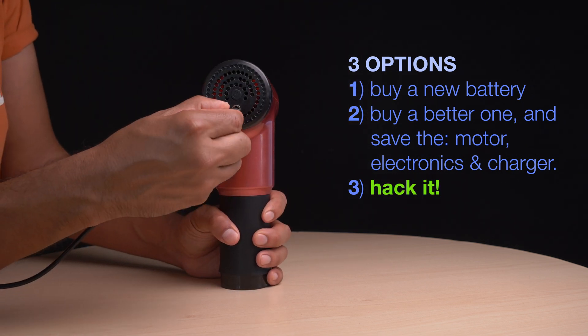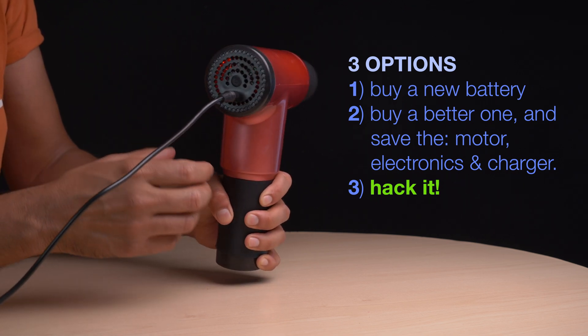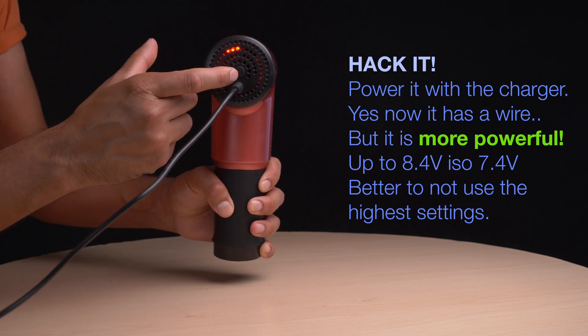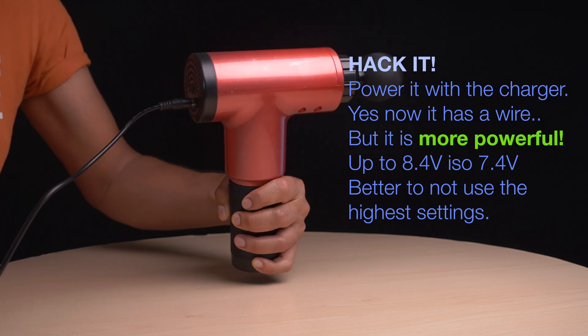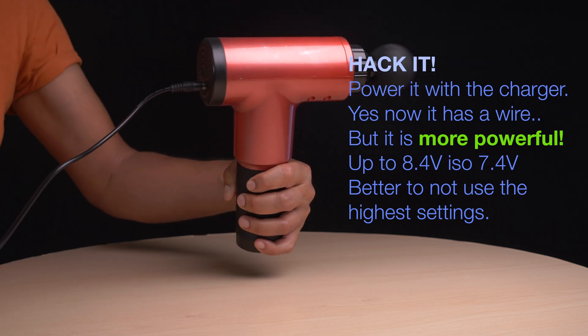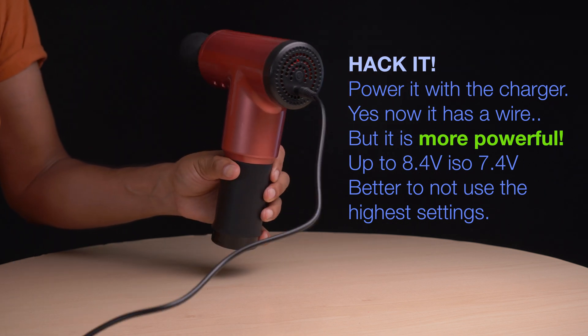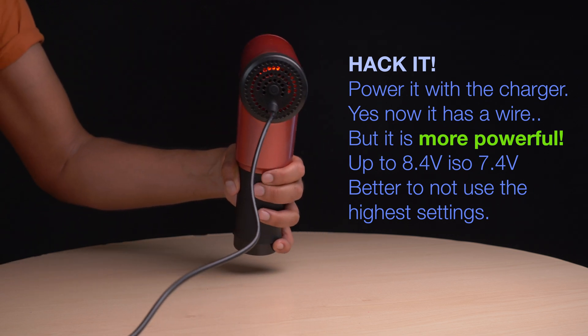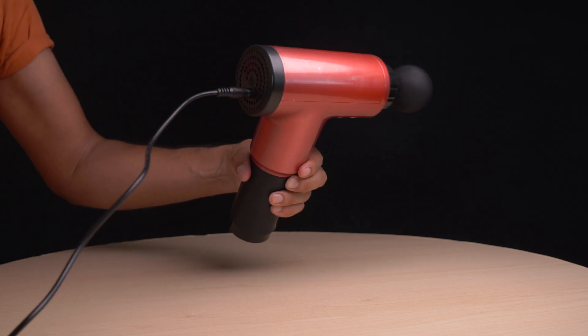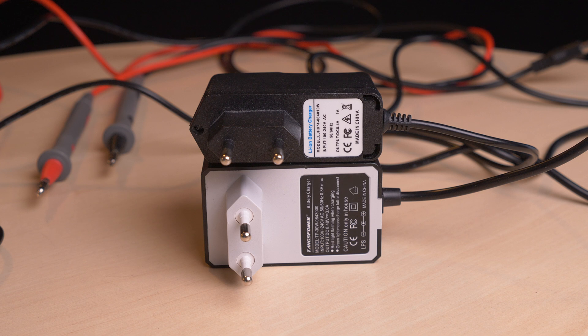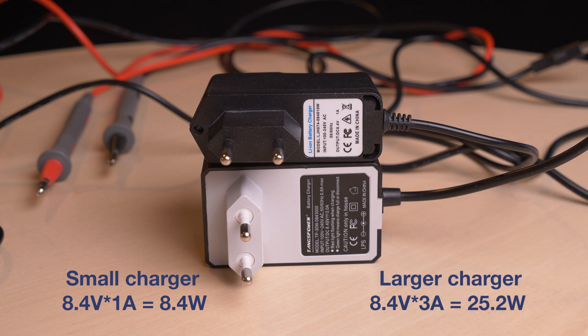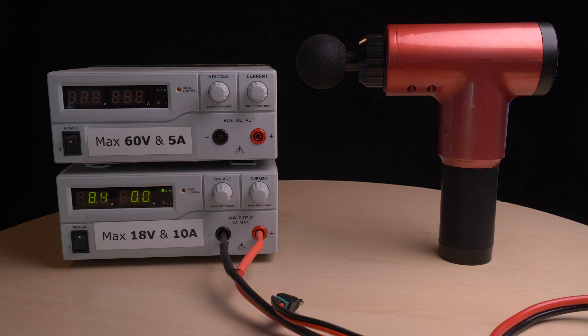This massage gun works when you power it with the charger. That's not the way to do it, but it works. Normally, the massage gun gets 7.4 volts. From the charger, it gets 8.4. That's a bit much, so I would suggest to not use the highest settings. Be sure to calculate how much power your charger can deliver. It needs to be more powerful than the massage gun needs. Otherwise, you can get fire.